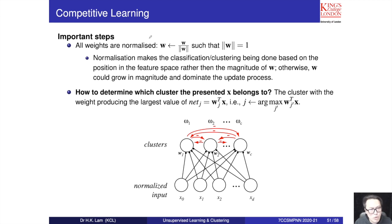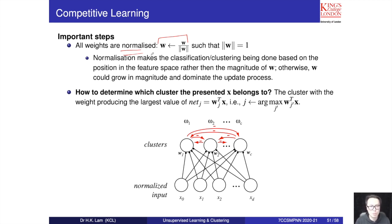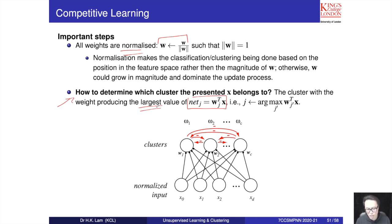An important step is that we must normalize w during the algorithm. In each iteration, after determining the winner w, we normalize wj by dividing it by its L2 norm. We pick the cluster center with the largest inner product value as the winner.